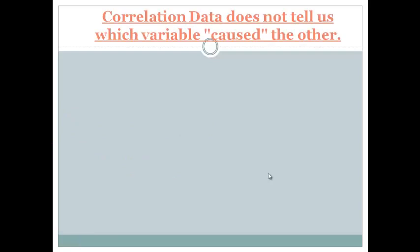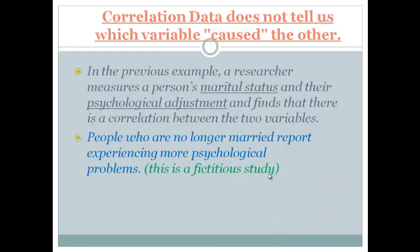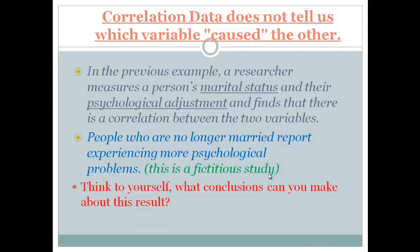We're going to also talk about what correlations do not tell us. Remember, in the previous example, research supposedly measured people's marital status. Were they married or divorced? And then there's psychological adjustment. And we might find that there's a correlation between the two variables. The people who are no longer married or who are divorced report experiencing more psychological problems. Remember, this is a fictitious study. This may be true. It's just an example that I came up with for this video. So think to yourself, what conclusions can you make if this result was true? Because there's more than one. Pause it if you need to. We'll talk about this again in class tomorrow.